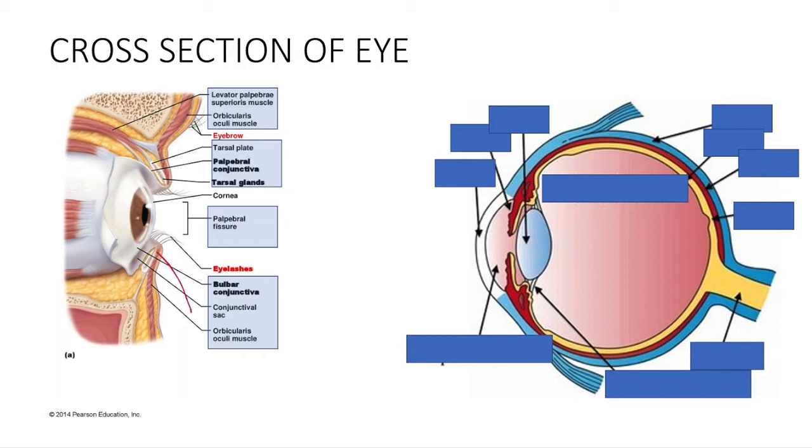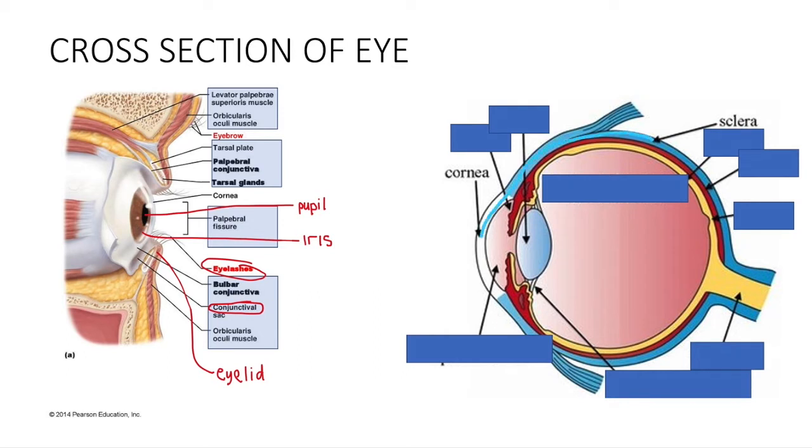So corresponding to the previous image, it will be the eyelid over here, eyelash, the conjunctiva, the iris and the pupil. Here, the little bulge over here will be the cornea. It is continuous with the sclera. Continuous means it's connected together. It helps to bend light rays into the eyeball.